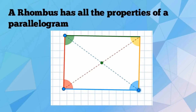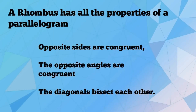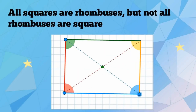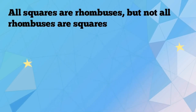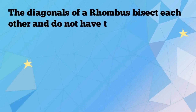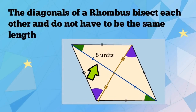A rhombus has all the properties of a parallelogram. These include: opposite sides are congruent, opposite angles are congruent, and the diagonals bisect each other. All squares can be considered a rhombus, but not all rhombuses are squares. The diagonals of a rhombus bisect each other, but they do not have to be the same length.